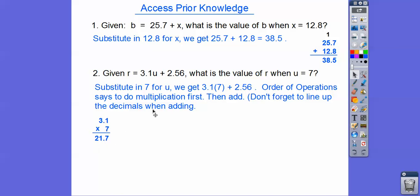21.7 is substituted in, and then we add. Remember we have to line up the decimals: 21.7 and then 2.56. You can pretend there's a 0 after the 7, then add straight down. 7 plus 5 is 12, carry the 1. 1 plus 1 plus 2 is 4, and we get 24.26.